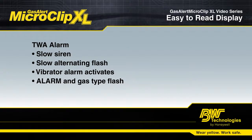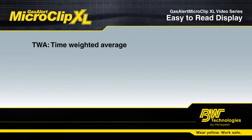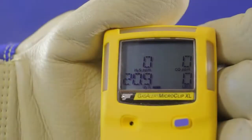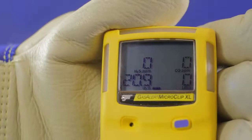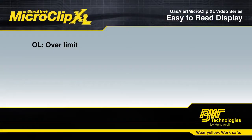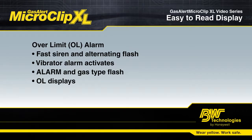Like STEL, TWA alarms are also calculated for toxic gases. A TWA alarm signals a cumulative exposure over time, typically an 8-hour period. TWA stands for Time Weighted Average. If you are taking proper action and evacuating any time a low or high alarm is sounded, your Gas Alert Micro Clip XL should not go into STEL or TWA alarm. The fifth type of alarm is an OL, or Over Limit Alarm. This means that the level of gas in the environment is beyond what the sensor can measure. OL will flash in place of the reading of that sensor.